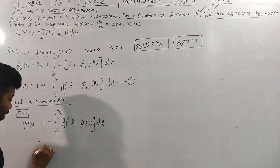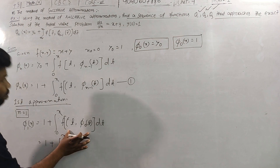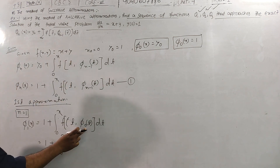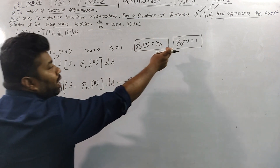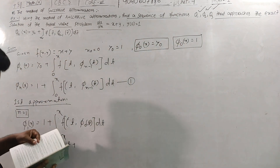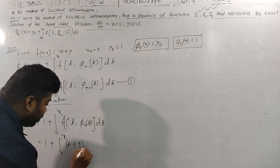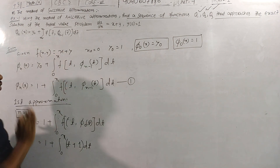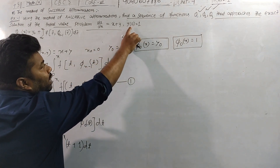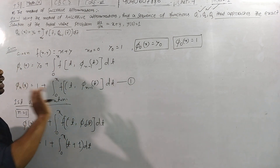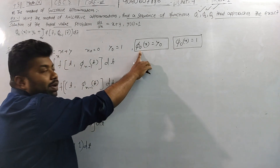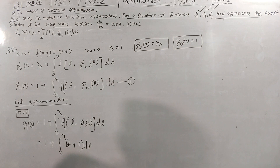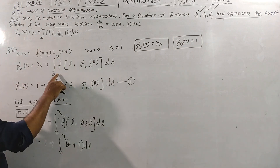So φ1(x) = 1 plus the integral from 0 to x of (t + φ0(t)) dt. Putting φ0(t) = 1, we get the integral from 0 to x of (t + 1) dt. The function f(x,y) = x + y with initial condition x0 = 0, y0 = 1. So φ0(x) = 1, and φ1(x) = 1 plus the integral from 0 to x of (t + 1) dt.